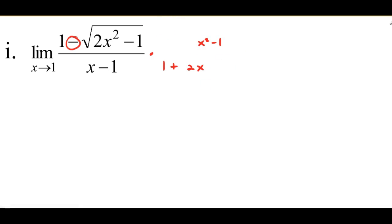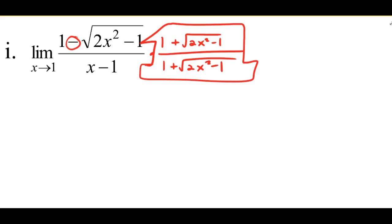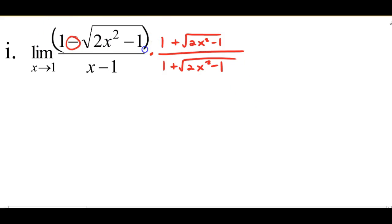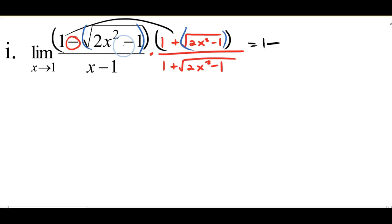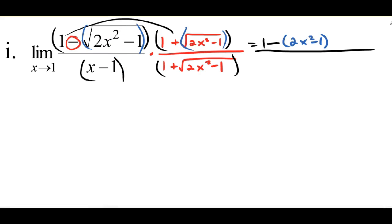Multiplying out, I have a sum and difference binomial in the numerator: the first squared gives 1, minus the last squared. Squaring the radical removes it, giving me 2X squared minus 1. I need to keep parentheses on this binomial because it's minus the whole thing. In the denominator, I do not want to distribute — my goal is to eventually cancel it out, so it has to stay factored as two factors being multiplied.